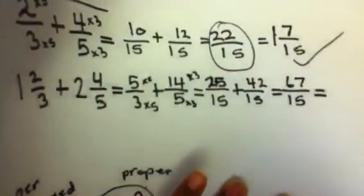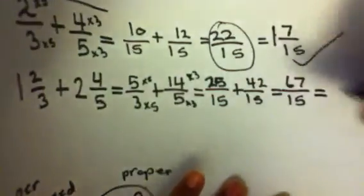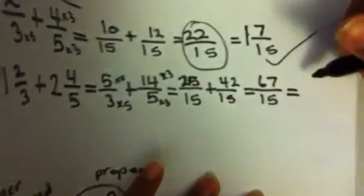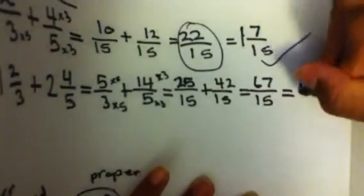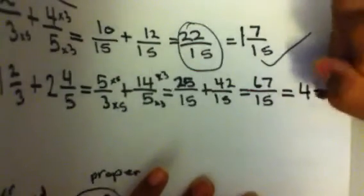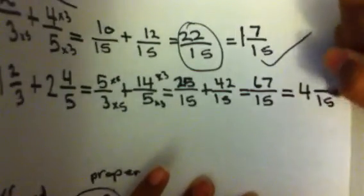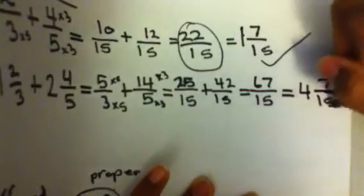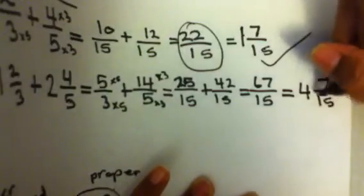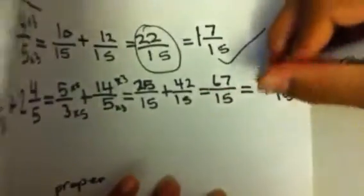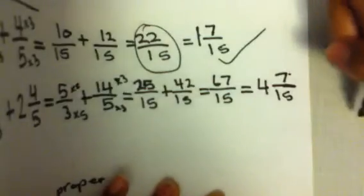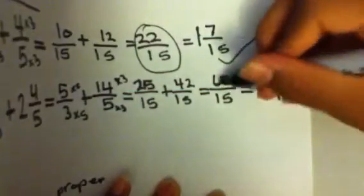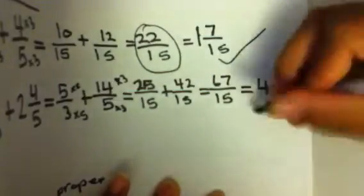And you change it into a mixed fraction now: 4 times 15 equals 60, so 15 times 4 equals 60. 60 plus 7 equals 67, which matches — so it's correct.